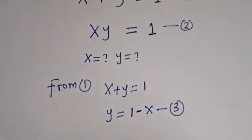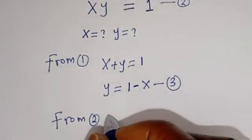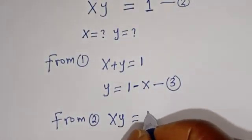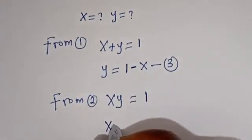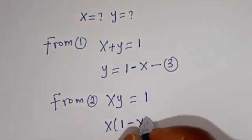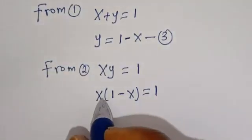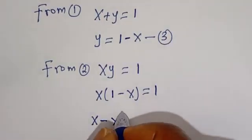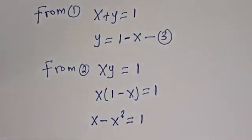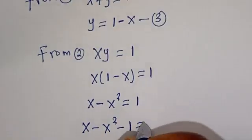And from equation 2, XY is equal to 1. Let's substitute for Y. We have S bracket (1 minus S) is equal to 1. Let's open the bracket: S times 1 is S, then S times minus S gives minus S squared. So we have S minus S squared minus 1 is equal to 0.